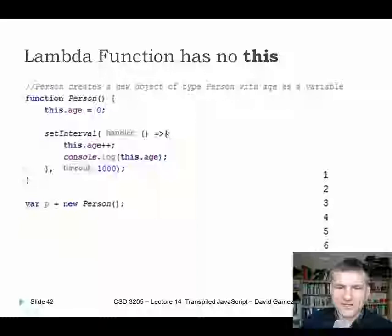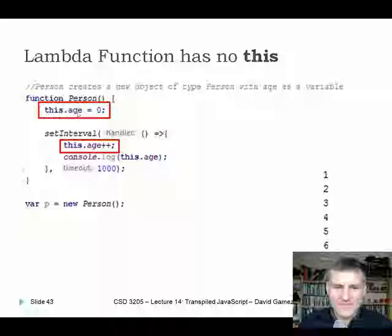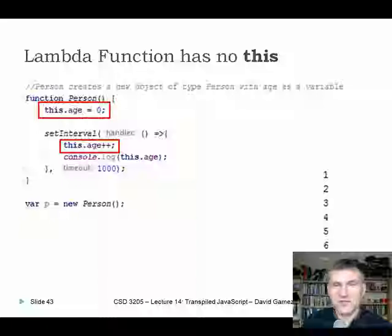Lambda functions solve this problem because there is no this associated with a lambda function. Because it's a lambda definition, it doesn't have its own this scope. So this.age in the inner lambda refers to the same this.age as the outer function, and it works just fine. Lambda functions have real advantages in avoiding the this scope issue. You can choose to have this scope by using the function keyword, or choose not to by using the lambda syntax.